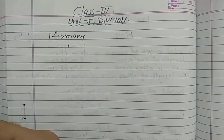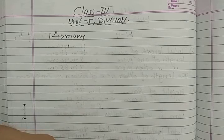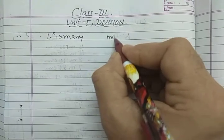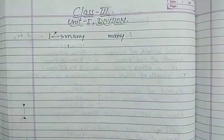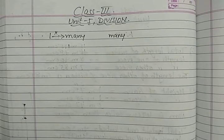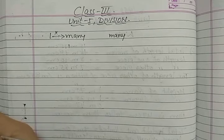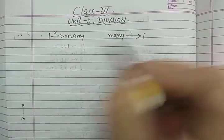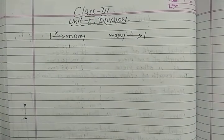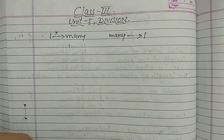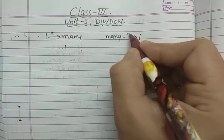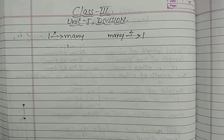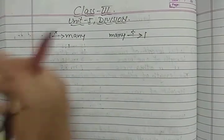But now, division is just the opposite of multiplication. So iska opposite jo hoga, that is division. Jab bahut saari cheezein di hain — when the cost of many chocolates is given, suppose the cost of three chocolates is rupees 15, and you have to find out the cost of one chocolate — in that case, you have to divide. So multiplication and division are just opposite to each other.